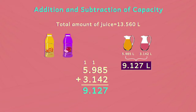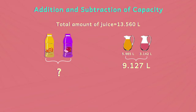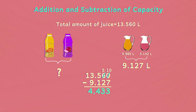We know that she served 9.127 litres of juice to the guests. So how much juice is remaining? There is a total of 13.560 litres of orange and apple juice. To find the juice remaining, we subtract 9.127 litres from 13.560 litres. Subtracting gives us 4.433 litres. Thus, 4.433 litres of juice is remaining with mother.